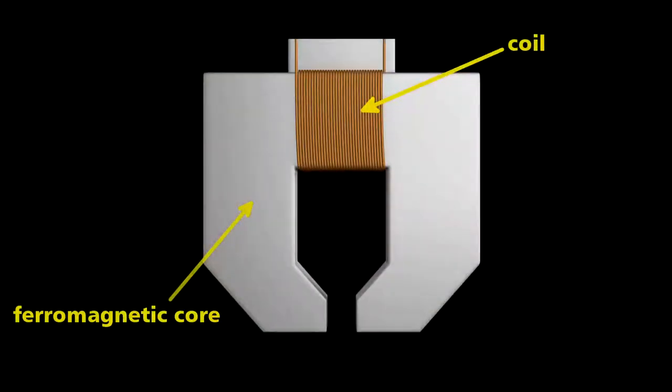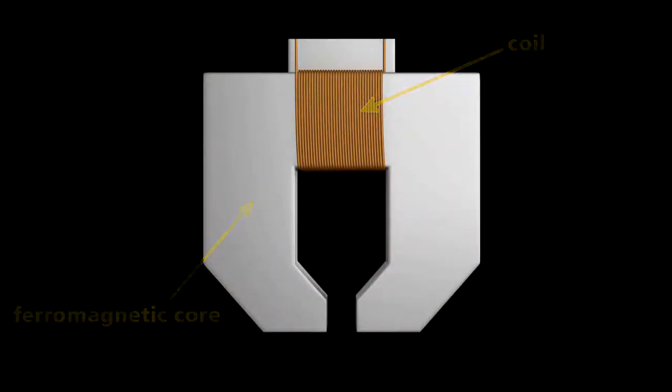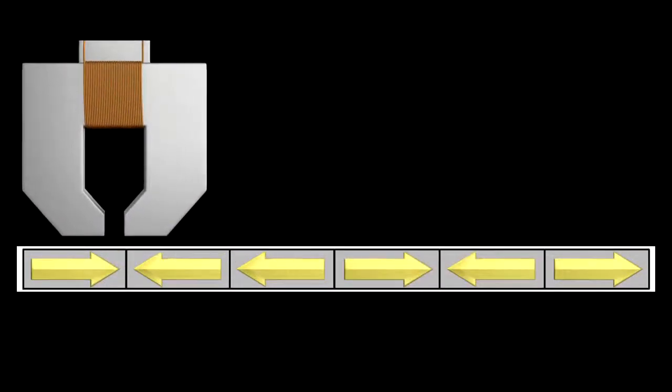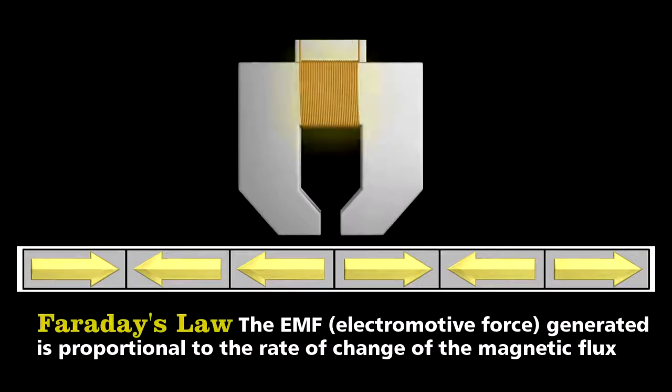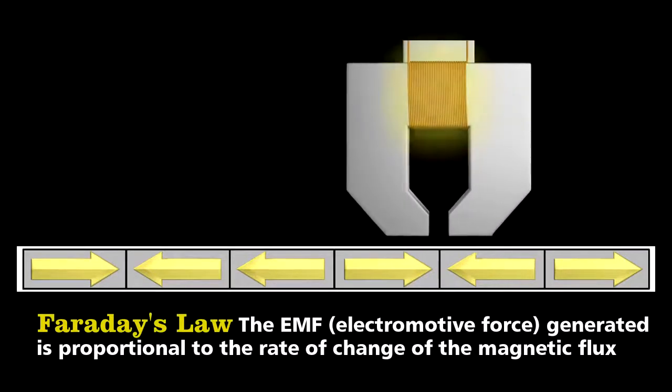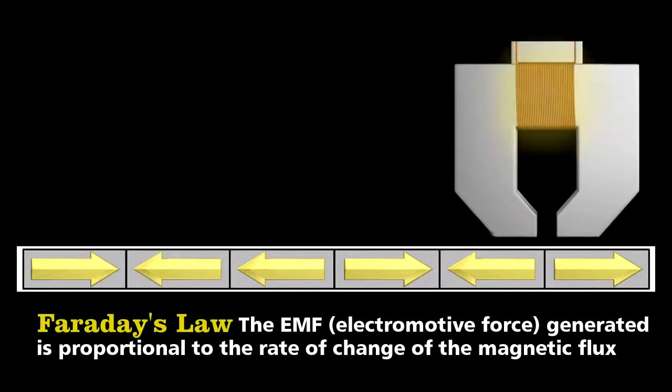At its simplest, it's a piece of ferromagnetic material wrapped with wire. As it passes over the magnetized sections of the platter, it measures changes in the direction of the magnetic poles. Recall Faraday's law. A change in magnetization produces a voltage in a nearby coil.